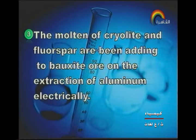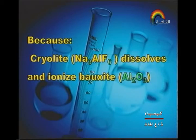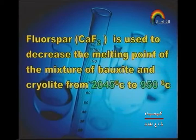Next point: the molten cryolite and fluorspar are added to bauxite in the extraction of aluminum electrically because cryolite, sodium aluminum fluoride Na₃AlF₆, dissolves and ionizes bauxite which is aluminum oxide Al₂O₃. Fluorspar, calcium fluoride, is used to decrease the melting point of the mixture of bauxite and cryolite from 2045°C to 950°C.